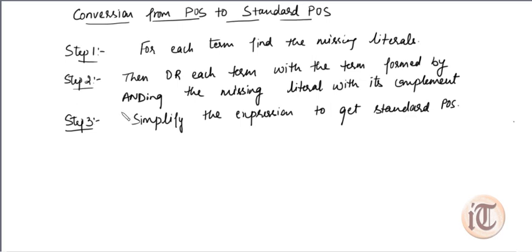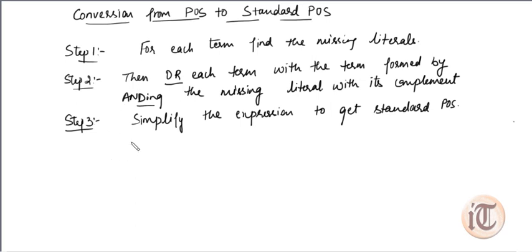In this procedure, step one says that for each term we have to find the missing literal. Step two is that we have to OR each term with the term formed by ANDing the missing literal with its complement. And step three is we have to simplify the expression to get the standard POS.